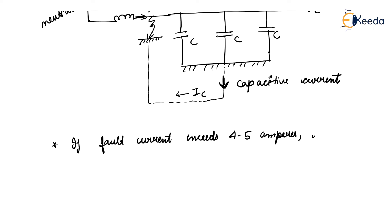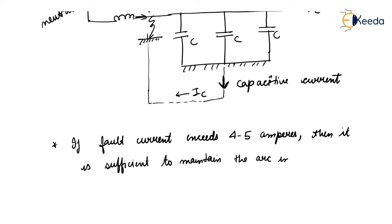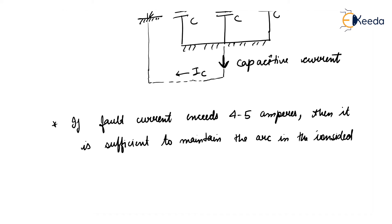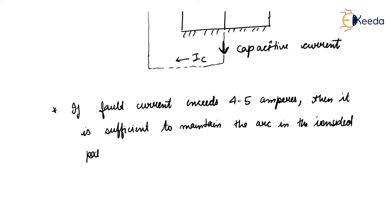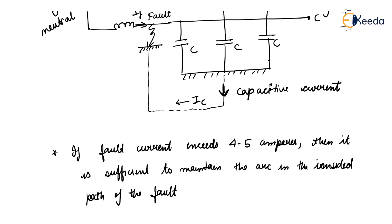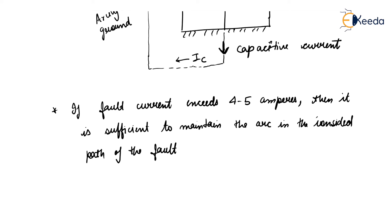The capacitive current over 4 to 5 amperes flowing through the fault gives rise to an arc in the ionized path of the fault. This is arcing ground, even though the fault has cleared itself.